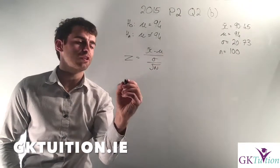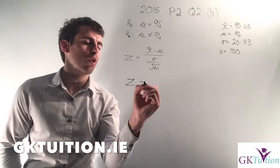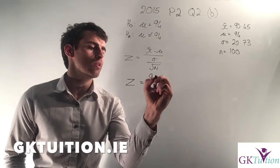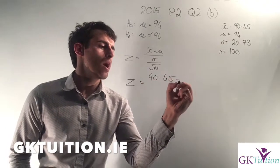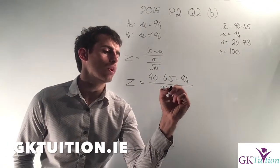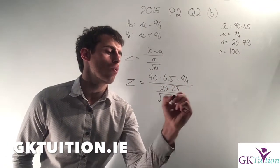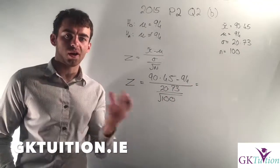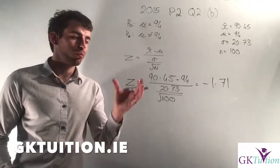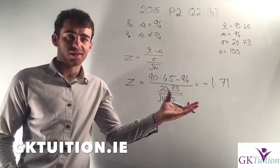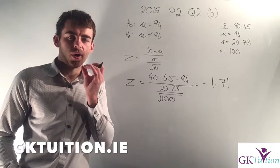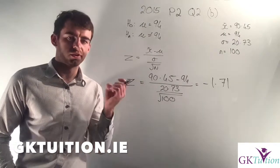In order to test at the 5% level of significance, we're going to use this formula. Once we've identified this, it's relatively straightforward. I want to work out what my z-score is based on this information. My sample mean was 90.45 and the mu in this case is 94, and I'm going to divide that by 20.73 over the square root of 100. If I plug all of this into my calculator, I get minus 1.71. That's all the maths we needed to do, and now we just need to conclude.